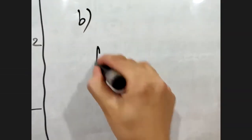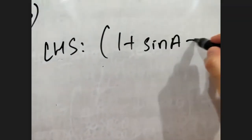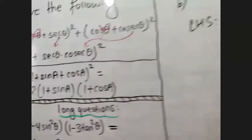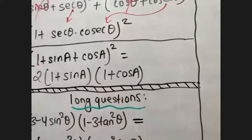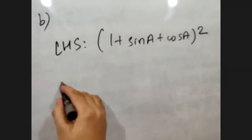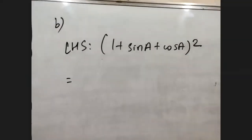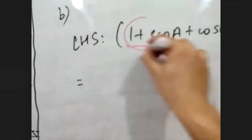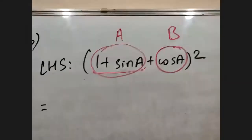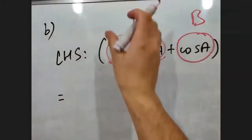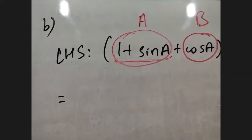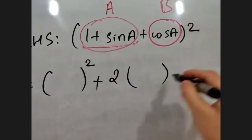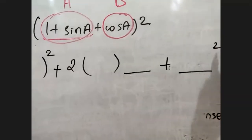Let's move to Question B. The LHS is: one plus sine A plus cos A, all square. Looking at the right part we have two times (1 + sinA)(1 + cosA). To solve, we apply the (a + b)² formula. Let a equal (1 + sinA) and b equal cosA. So the expansion gives a² + 2ab + b², which is (1 + sinA)² + 2(1 + sinA)(cosA) + cos²A.